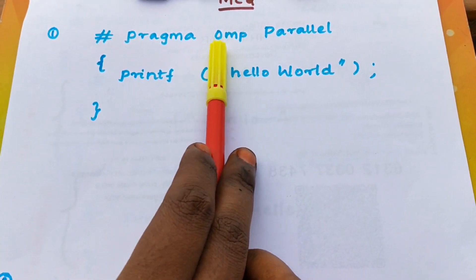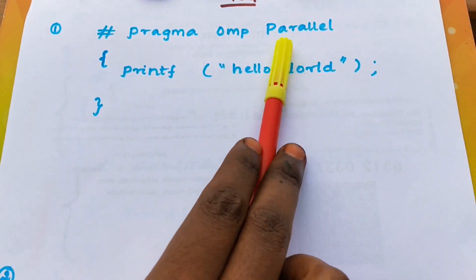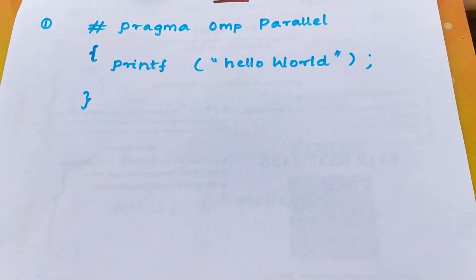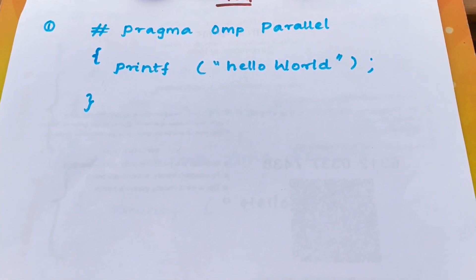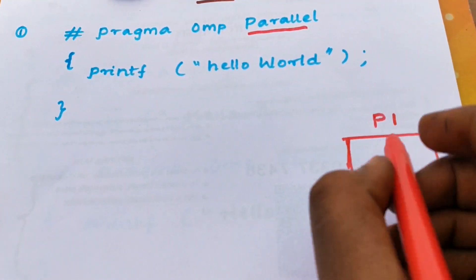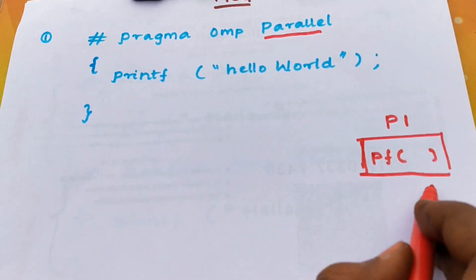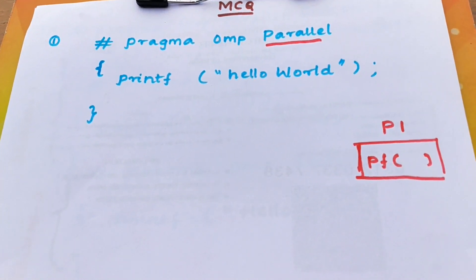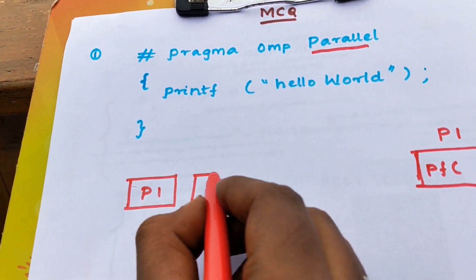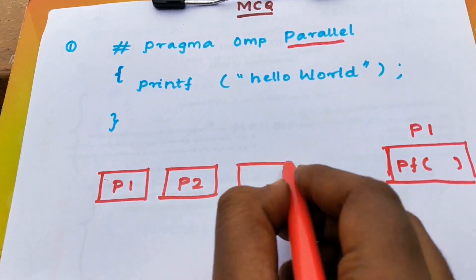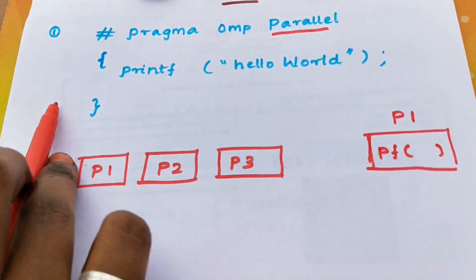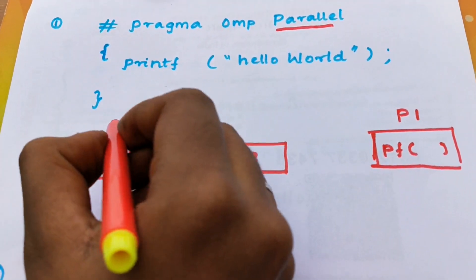In an OpenMP program, pragma omp parallel enables parallel execution. The print statement prints 'hello world' as output. In a single processor, the program executes just one print statement — that means 'hello world' is printed once. But in parallel execution, multiple processors — like processor 1, processor 2, processor 3 — each individually execute the same program.